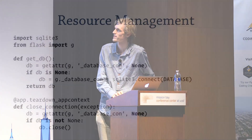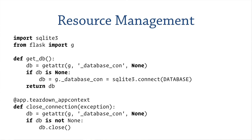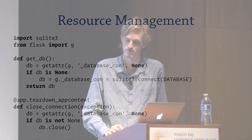Here's how resource management works — this is actually from the documentation. You have a function called get_database. First you check: does this thing already exist on g? If it's None, it hasn't been created, so you connect to the database and store it on g. From that moment on, the first time someone needs the database a connection appears. Then there's a separate teardown_app_context function — you can register as many of those as you want. Whenever the context closes down, at end of request or end of a cron job, it checks if there's a database connection and closes it out.